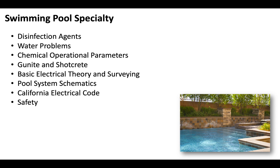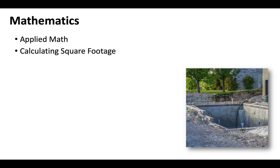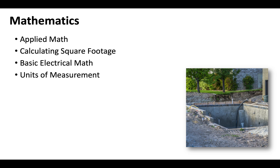There's going to be a lot of other things covered on the trade exam — this is just a quick snapshot of what you need to know, but you'll want to be able to answer a variety of different questions covering swimming pools. The mathematics you'll want to have tight: applied math, addition, subtraction, multiplication, division, calculating square footage. There will be electrical questions, so make sure you have your basic electrical math down, units of measurement, and job costing.